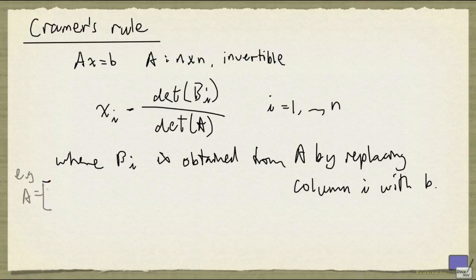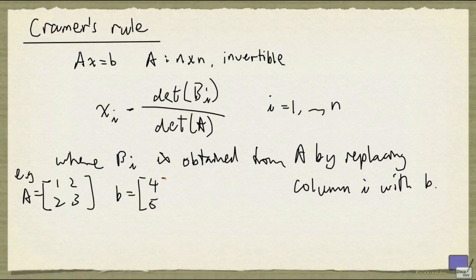So suppose that A is the matrix 1, 2, 2, and 3, and b is the tuple 4, 5.